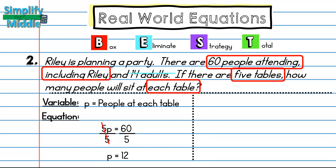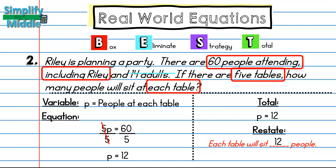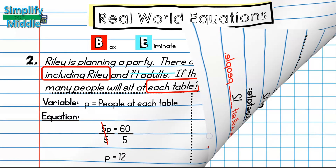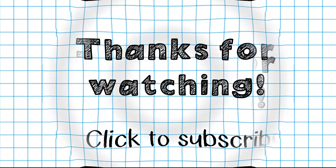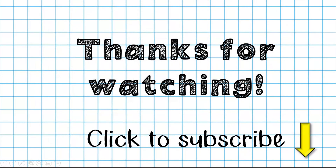My total is p = 12, which means each table will sit 12 people. That wraps up our lesson — thanks so much for tuning in. Feel free to click to subscribe for this and other lessons.